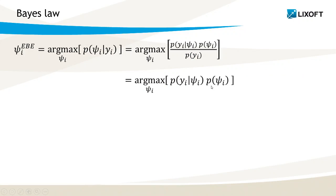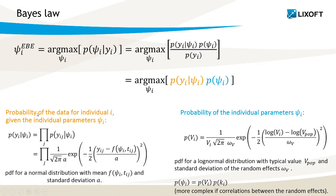The two terms that remain have a closed-form solution. They have been explained in detail in the video of the week 111. In brief, the first term is the probability of the data for individual i given the individual parameters. It depends on the model prediction f and the observation model.